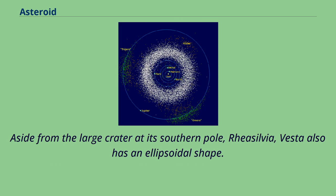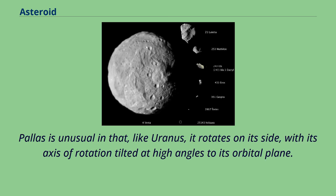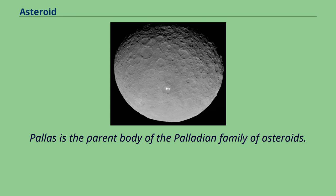Aside from the large crater at its southern pole, Rheasilvia, Vesta also has an ellipsoidal shape. Vesta is the parent body of the Vestian family and other V-type asteroids, and is the source of the HED meteorites, which constitute 5% of all meteorites on Earth. Pallas is unusual in that, like Uranus, it rotates on its side, with its axis of rotation tilted at high angles to its orbital plane. Its composition is similar to that of Ceres, high in carbon and silicon, and perhaps partially differentiated. Pallas is the parent body of the Palladian family of asteroids.